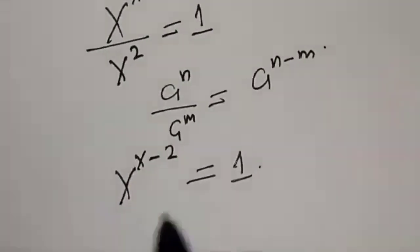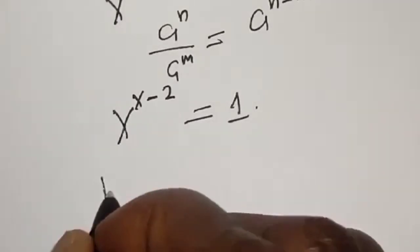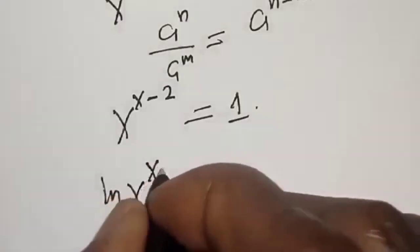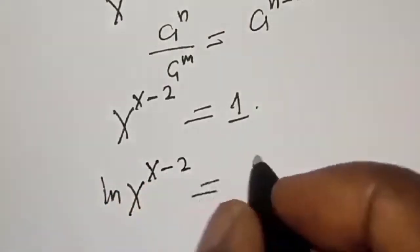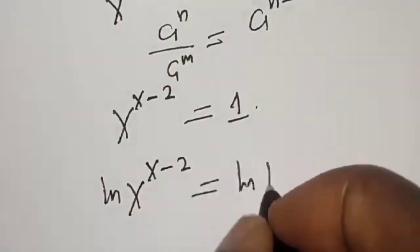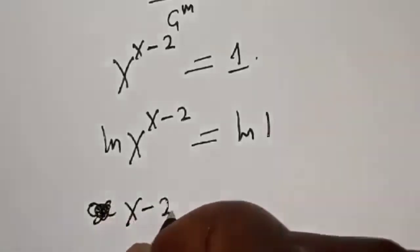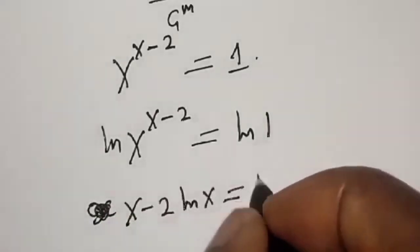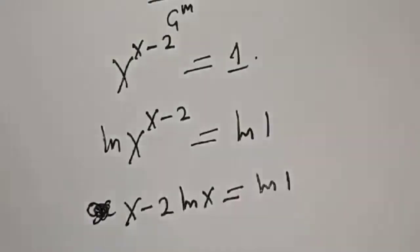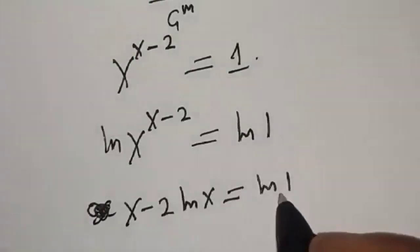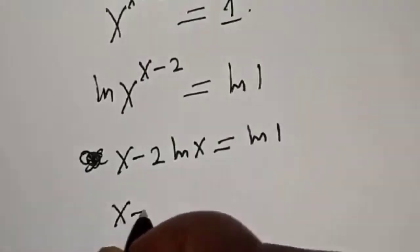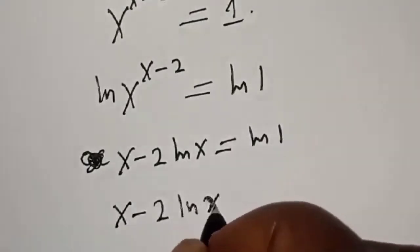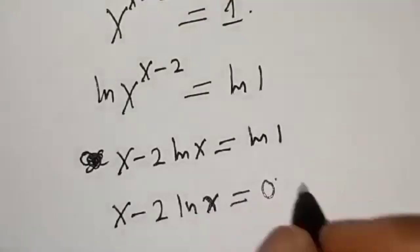Let's take the natural log of both sides. Natural log of s raised to power s minus 2 is equal to natural log of 1, which equals 0. So we get: s minus 2 times natural log of s is equal to 0.